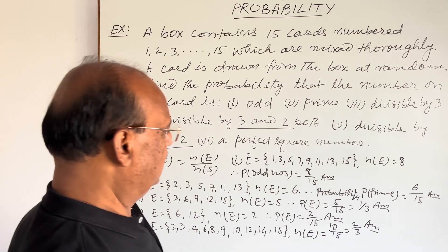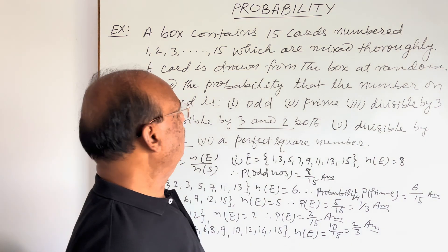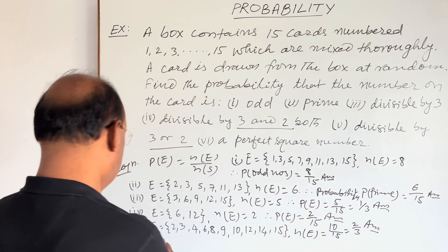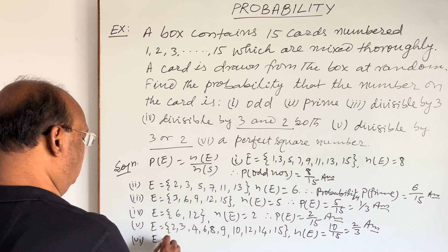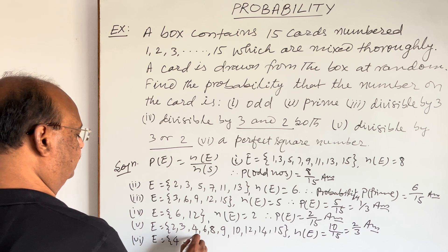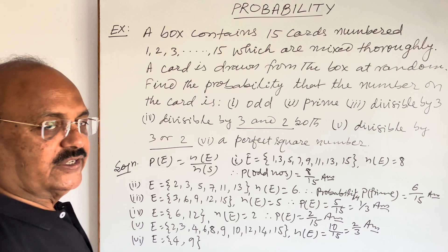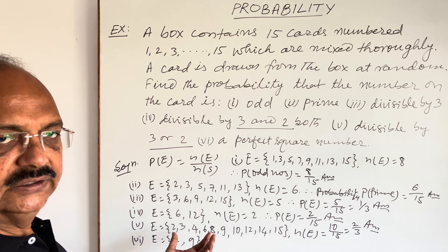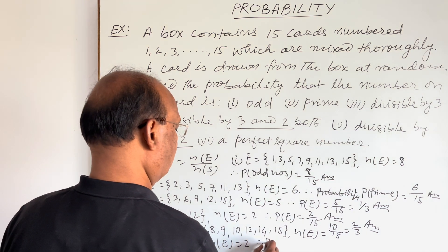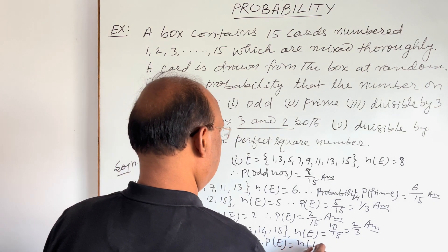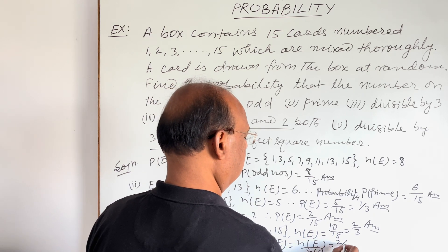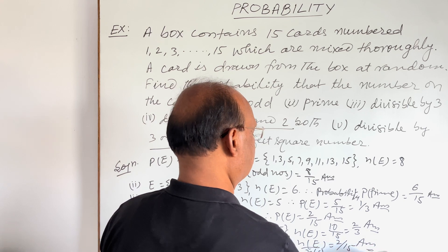And last part of this question. Probability to find that the card drawn bears a perfect square number. So let us collect the numbers which are perfect square between 1 and 15. That is, only 4 and 9. These are perfect squares between 1 and 15. So here, n(E) is 2. Therefore, probability of E is equal to n(E) divided by n(S), and this is equal to 2 by 15. This is the answer.